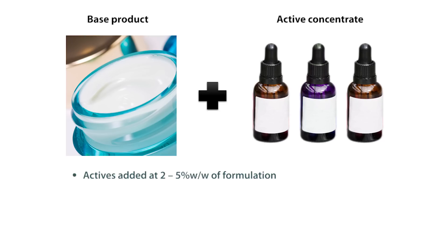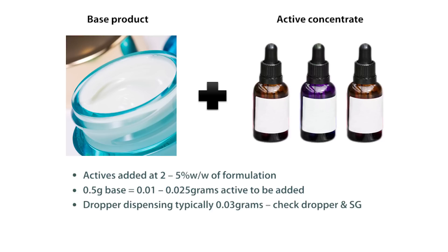Here's how it works. Actives are typically added at two to five percent by weight of a formulation. If you're adding two to five percent of an active in 0.5 grams of base, it means that 0.01 to 0.025 grams of active needs to be added. Dropper dispensing is typically 0.03 grams — you'll need to check your dispenser or dropper carefully and also the specific gravity of your active concentrate. Be careful: drops are in mL while product is in percent weight-for-weight, and mL and weight do not always equate.